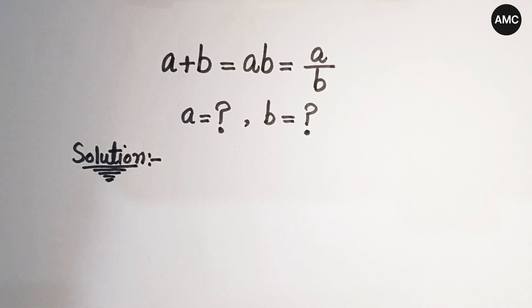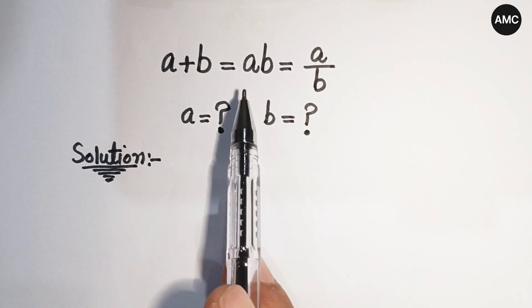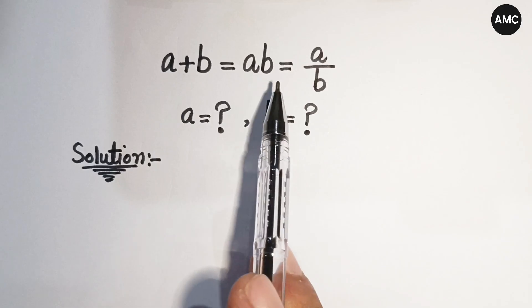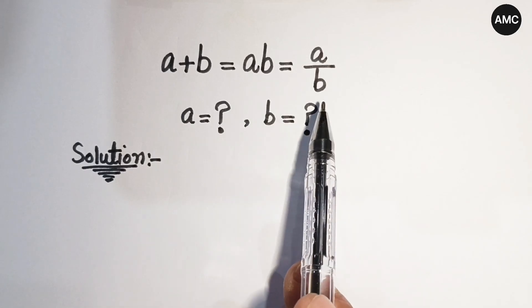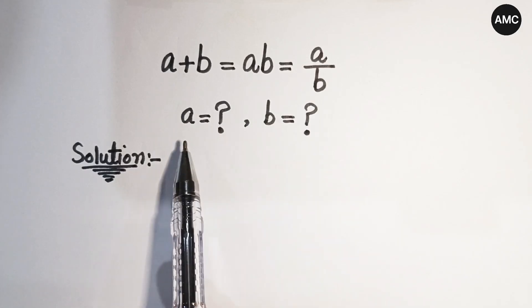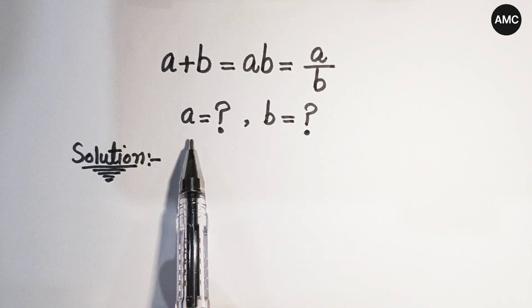Hello everyone, welcome back to Mean Math Club. Today we have a nice Olympiad maths problem: a plus b is equal to a times b is equal to a over b. We have to find the value of a and b.